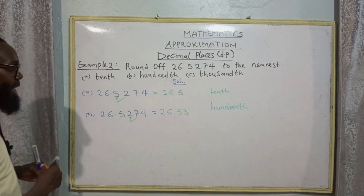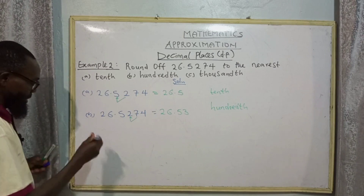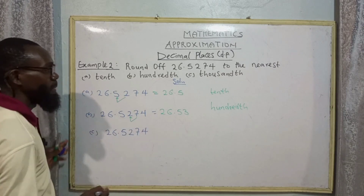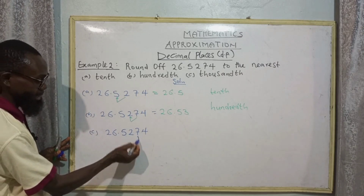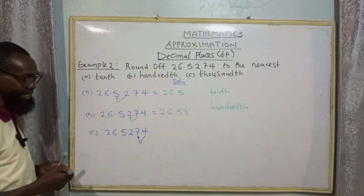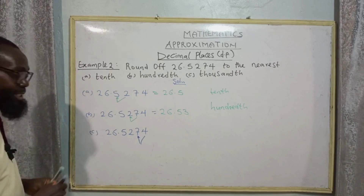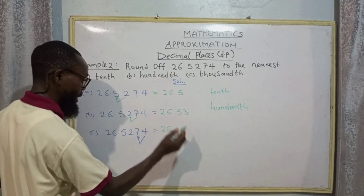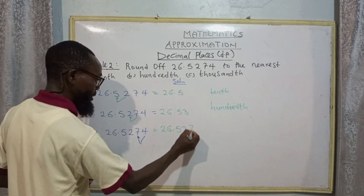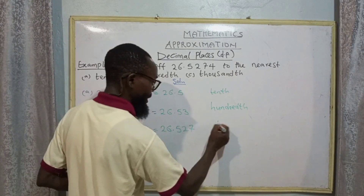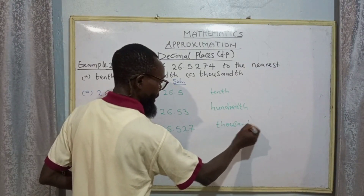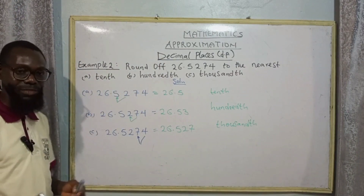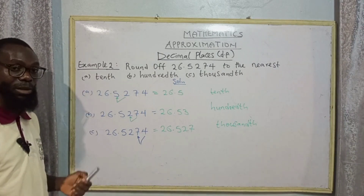For the nearest thousandths, using the same digits 26.5274 — tenths is five, hundredths is two, and thousandths is seven. Check the digit to the right: we have four. Four is not up to five, so round down to zero. We have 26.527 to the nearest thousandths. This is how to round given digits to the nearest given decimal place.